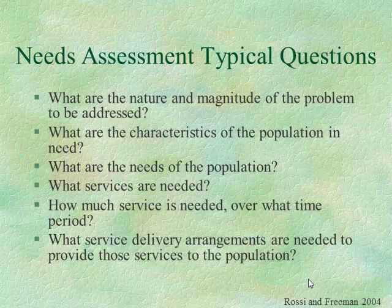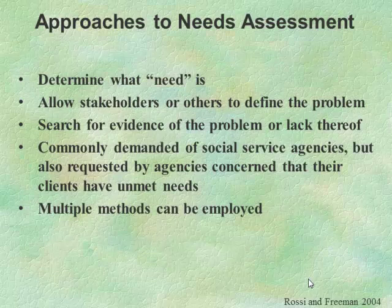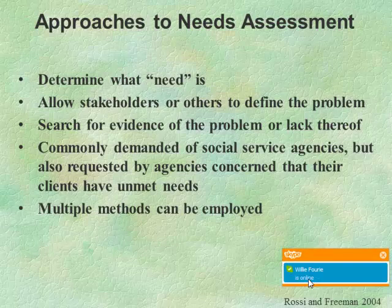Very often you're looking at the service delivery around it — this is a very obvious example. These are the approaches. You want to know what the need is, you want to look at stakeholders and their own definition. Do they actually see the same thing? You want evidence that this need actually exists, because very often people say this is the need, they have the social intervention, but they've got no actual evidence the need exists — it's somebody's pet project. Is it demanded by a social service agency? Do they need it? Now, if you look at the employee wellness program, sexual harassment in academic instances is really important.